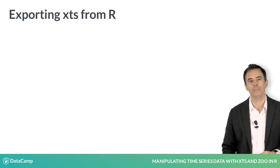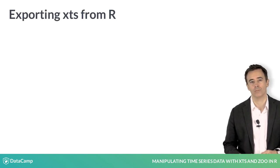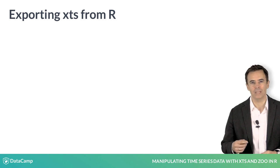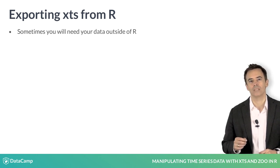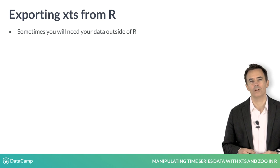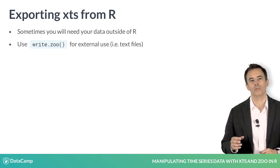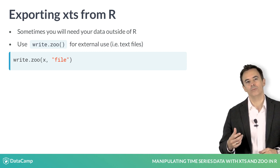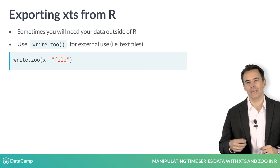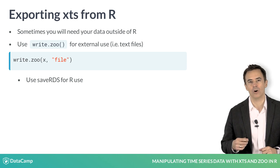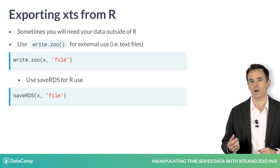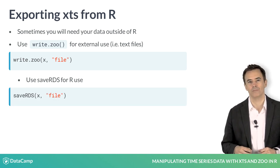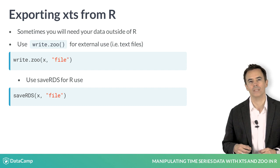Finally, you might be finished with all your data manipulation and transformation in XTS and need to send it along to a process outside of R. Zoo provides a great function called write.zoo, which will do a lot of the heavy lifting of extracting and formatting your times for you. If you are merely saving data for use in R later, I recommend using the base saveRDS function, which is optimized for objects like XTS and makes it fast and efficient to read and write data to disk.